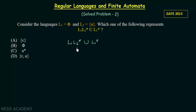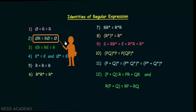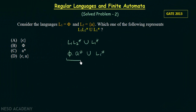Here we have L1 into L2 star. L1 is Phi, so we replace it: Phi into A star. From the identity of regular expressions, Phi into R equals R into Phi equals Phi — meaning Phi into anything is Phi itself, just like multiplying by zero. So Phi into A star is Phi.